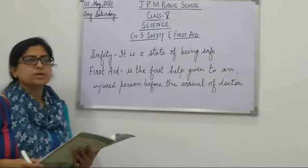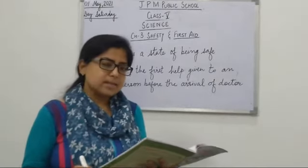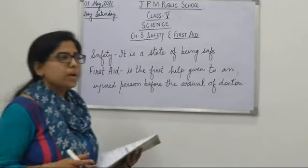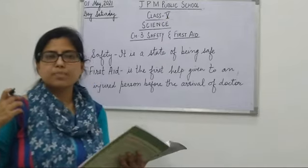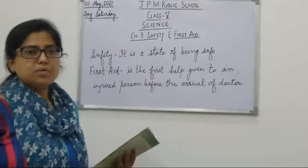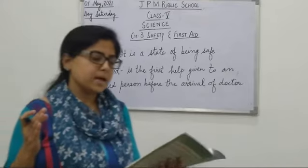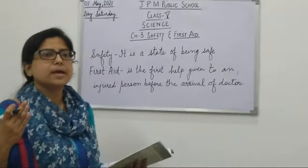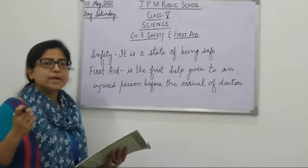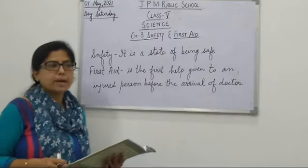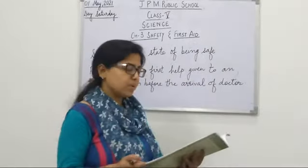Accidents may happen with anyone. An accident is an unpleasant event that happens unexpectedly, which can cause harm, injury, or even death. Accidents may happen with anyone, anytime and anywhere. We should always be careful and follow safety rules to avoid accidents.